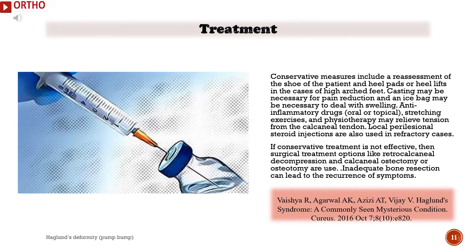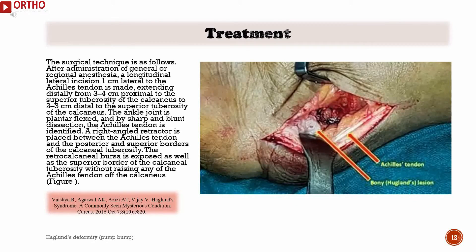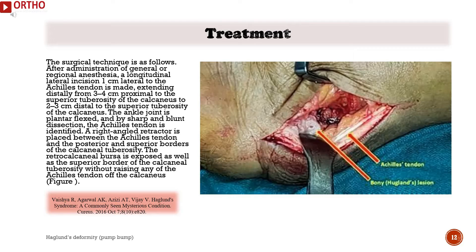If conservative treatment is not effective, surgical treatment options like retro-calcaneal decompression and calcaneal ostectomy or osteotomy are used. Inadequate bone resection can lead to recurrence of symptoms. After administration of general or regional anesthesia, a longitudinal lateral incision 1 cm lateral to the Achilles tendon is made, extending distally from 3 to 4 cm proximal to the superior tuberosity of the calcaneus to 2 to 3 cm distal to it. The ankle joint is plantar flexed, and by sharp and blunt dissection, the Achilles tendon is identified.